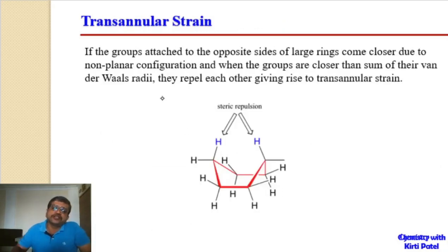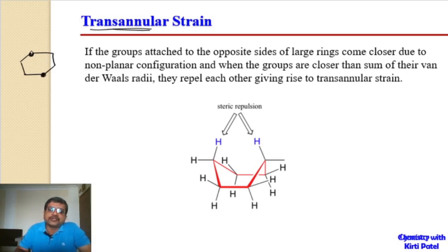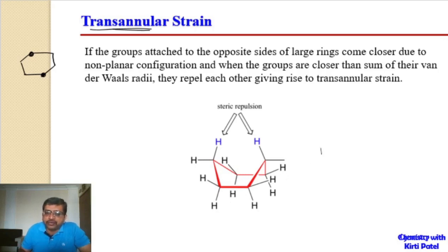The last strain in cycloalkanes is transannular strain. In cycloalkanes like cyclohexane, carbon atoms that are farthest apart from each other in the planar representation can actually come closer to each other in the three-dimensional puckered structure.